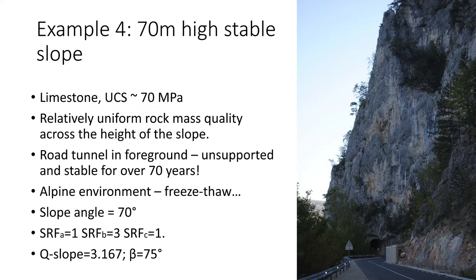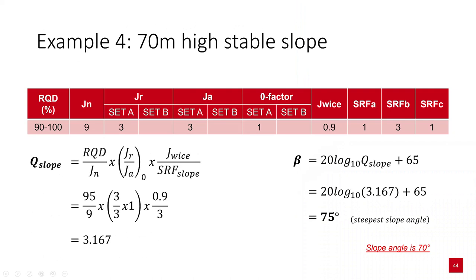The fourth example shows a stable slope of 70 metres in height in limestone in Serbia, with relatively uniform rock mass quality visible across the slope height. The road tunnel in the foreground is unsupported and has been stable for over 70 years in an alpine environment that experiences freeze and thaw during winter. Q-slope was applied with an average RQD of 95%, JN of 9, JR and JA both 3, a favourable joint orientation factor of 1, and SRF-B of 3 for the stress and strength relationship. Q-slope came to 3.167, corresponding to a long-term stable slope angle of 75 degrees — steeper than the current angle.